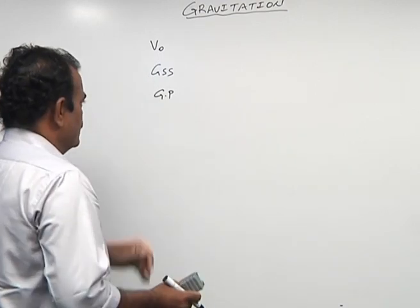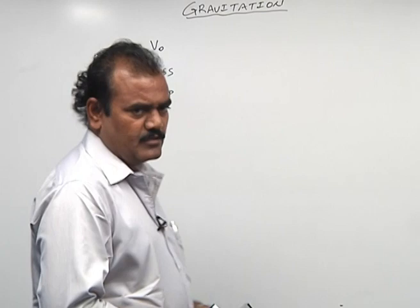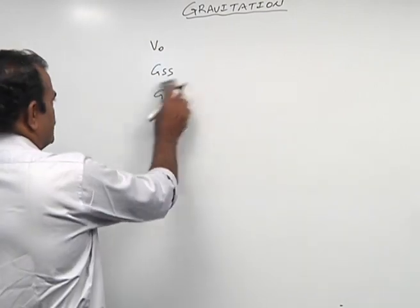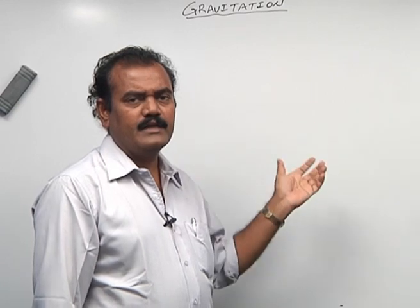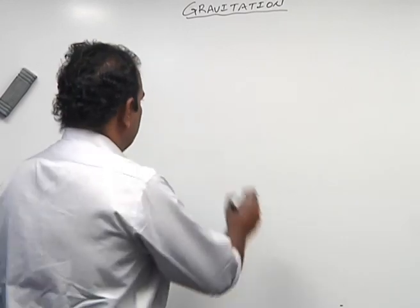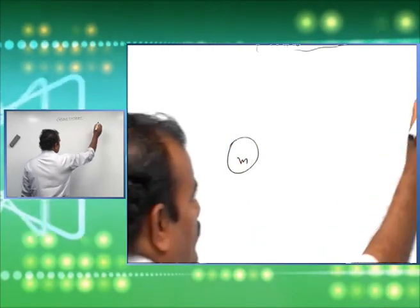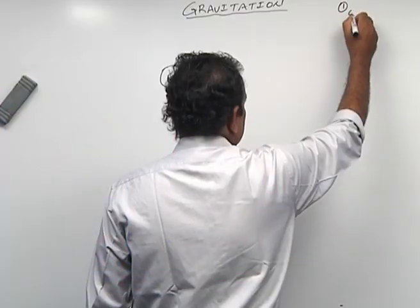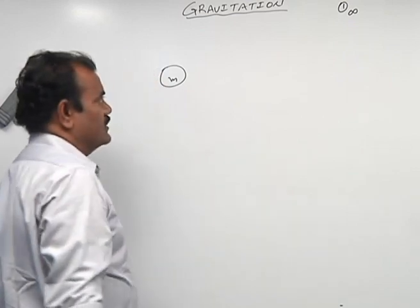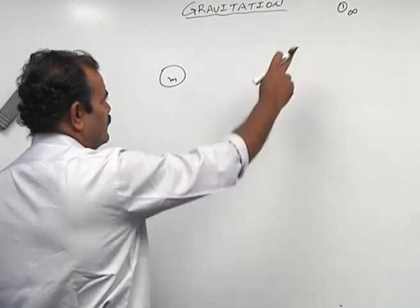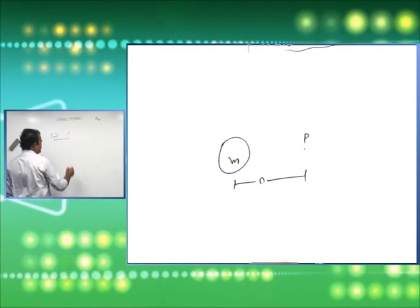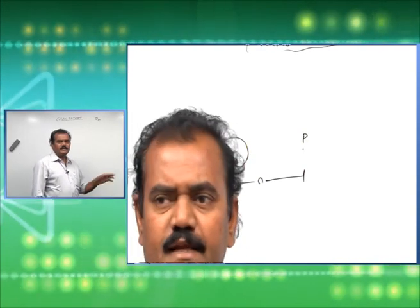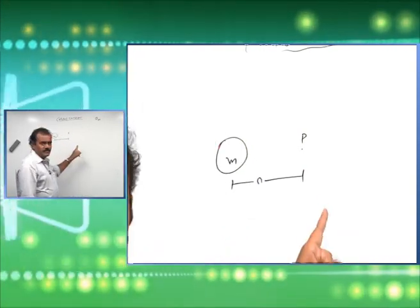Now we can continue from gravitational potential. Gravitational potential means it is the burden in moving - in bringing a unit mass from infinity to a point in the gravitational field. Suppose this mass M is there, and you are bringing a unit mass from infinity to a point P which is at a distance R, and that is the gravitational potential at that point.